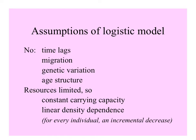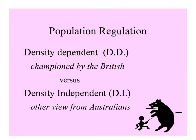The logistic model also has some assumptions, though not quite as simple as the exponential model. This one also has no time lags, no migration, no genetic variation, no age structure. Because we assume that resources are limited, a constant carrying capacity is assumed, along with linear density dependence — that is, each individual of the species leads to the same incremental decrease in resources available for all the others.